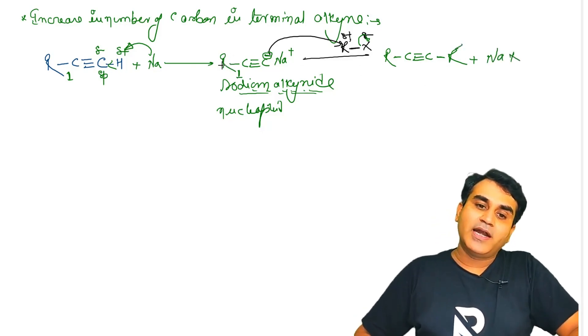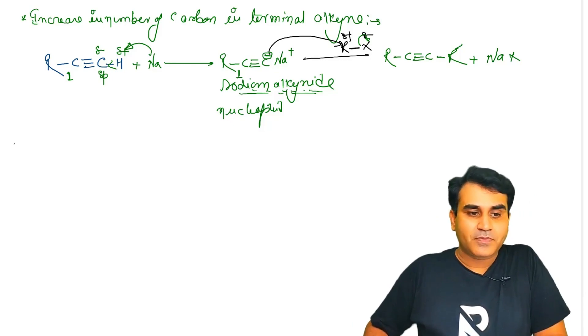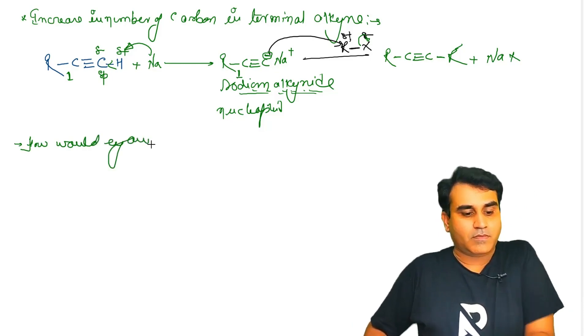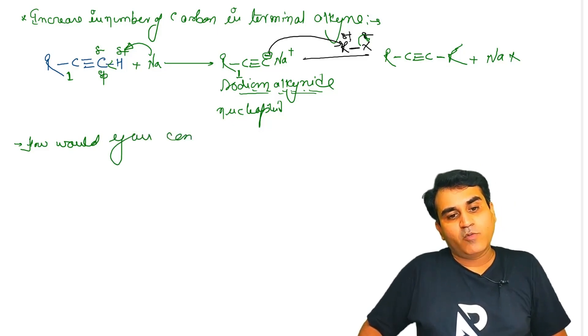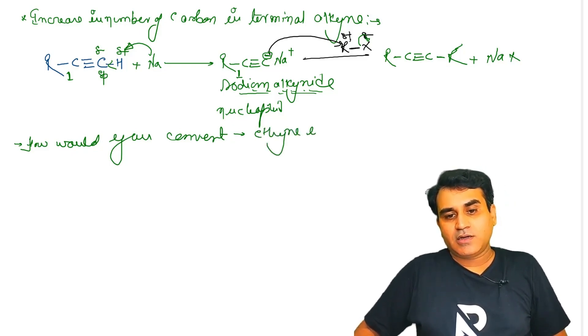So earlier you had less carbon in the alkyne and now you have more carbon in the alkyne. So let's take an example - how would you convert ethyne into propyne?